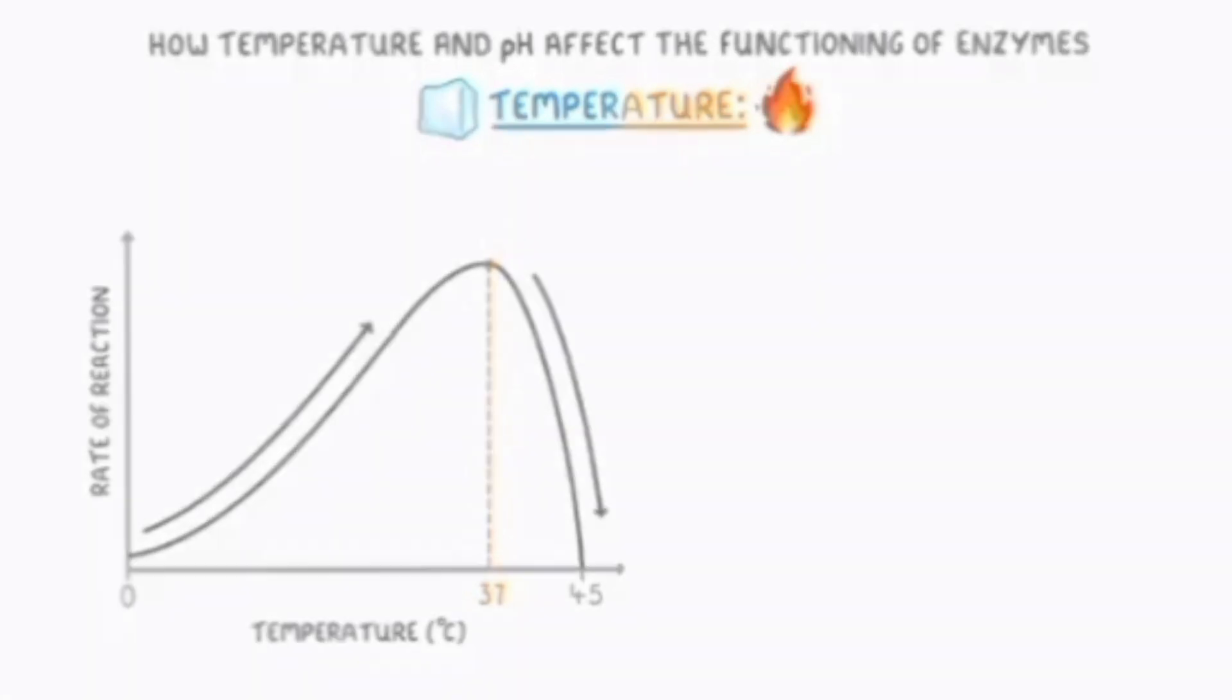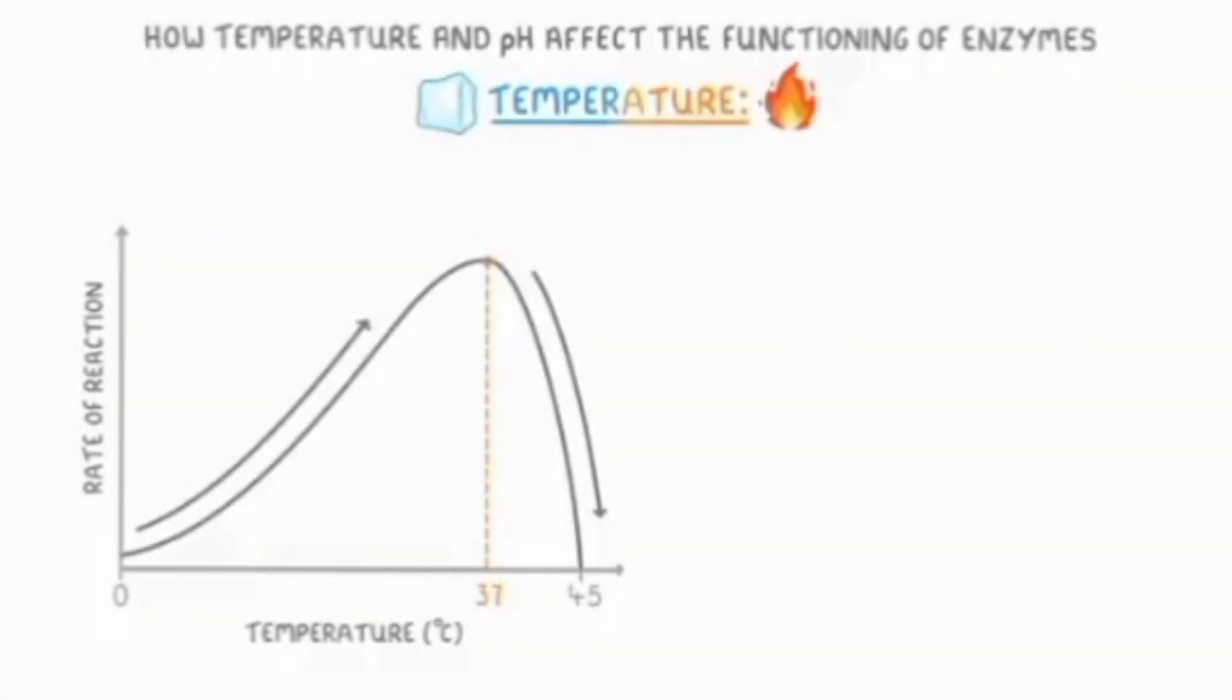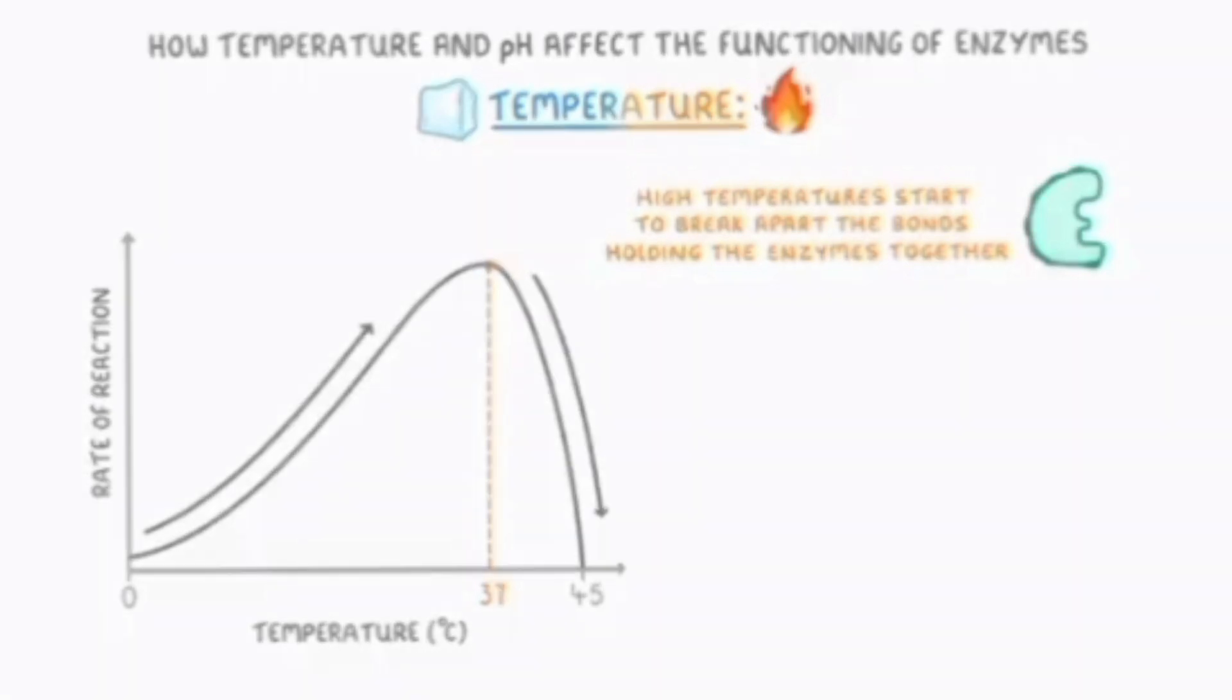Because the proteins are denatured, and as we know, most of the enzymes are proteins. At high temperature, the enzyme's hydrogen and ionic bonds break. This is why the shape of the enzyme is disrupted.